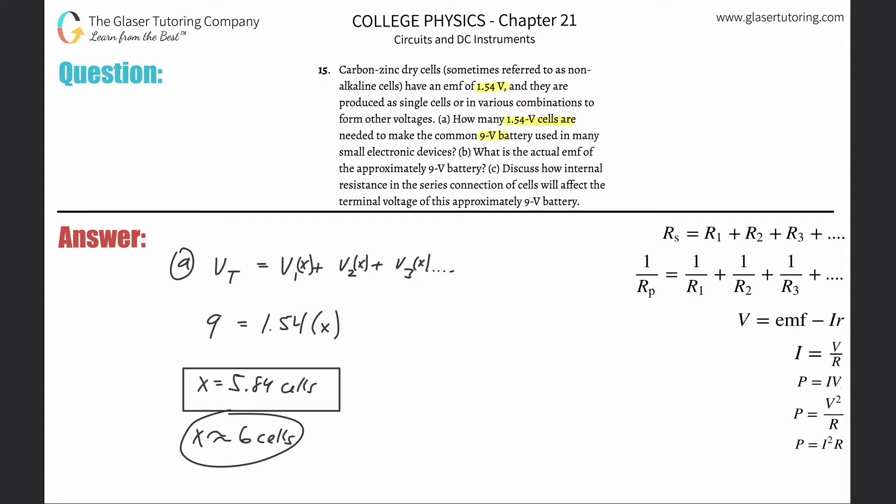Then it says, letter B: What is the actual EMF approximately? So again, we're using six cells because we can't use 5.84. This is very simple. If you had six cells and each of them were 1.54, what would be the total amount of EMF or voltage? Electromotive force kind of means voltage. So just take 6 and multiply by 1.54 and that's 9.24 volts. That's letter B.